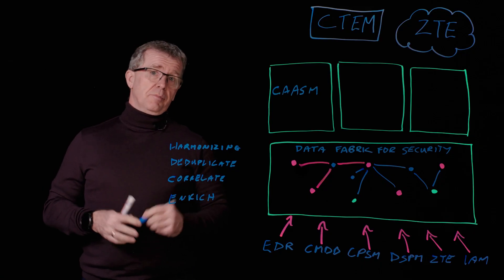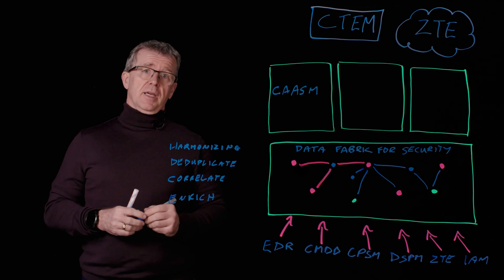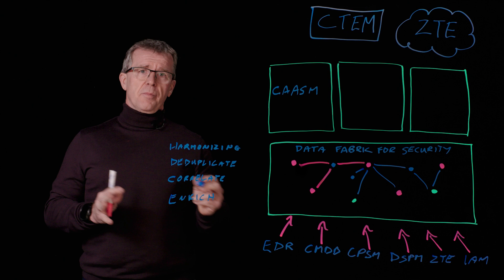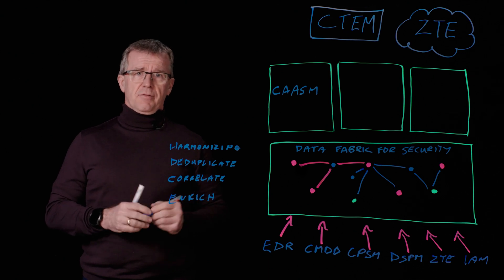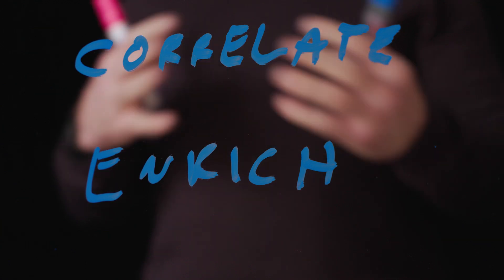Now lots of CASM tools can build their inventory from hundreds of different sources. That's not what makes this unique. What makes this unique is the transformation capability of the data fabric for security, and that delivers three powerful outcomes.